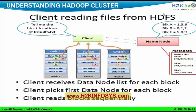Now let's look at the second functionality: client reading files from HDFS. The reading function is less complex than writing because there are no pipeline acknowledgements involved. The end user asks the client to retrieve result.txt, so the client asks the name node for the block locations of that file. Since the name node holds metadata about which blocks are stored on which data nodes, it checks and returns the block location information.